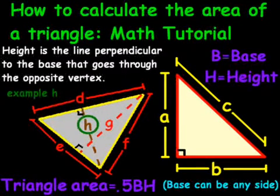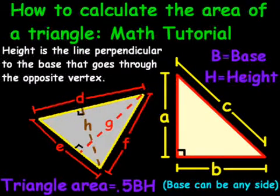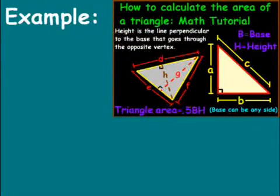Basically, the height is going to be the line that's perpendicular to the base that goes through the opposite vertex. Like I said, an example right here would be H. I've got it highlighted in green and circled there. And that is our formula for the area of a triangle. Now I'm going to walk through two examples. One of them is easy, one of them is not so easy.